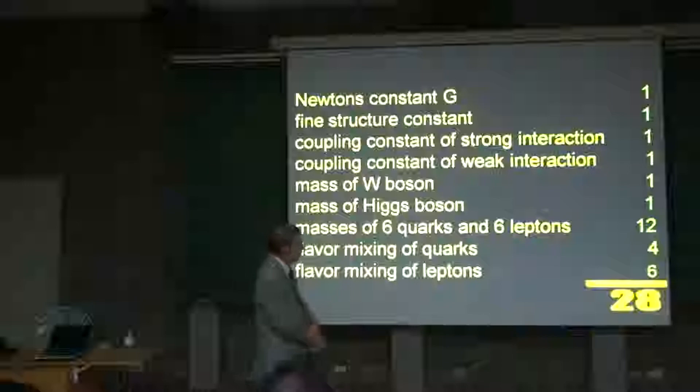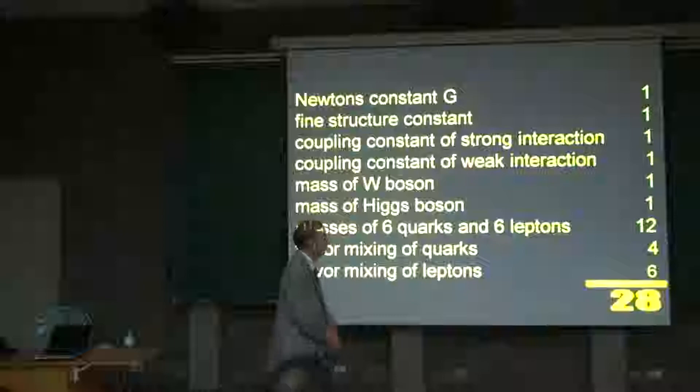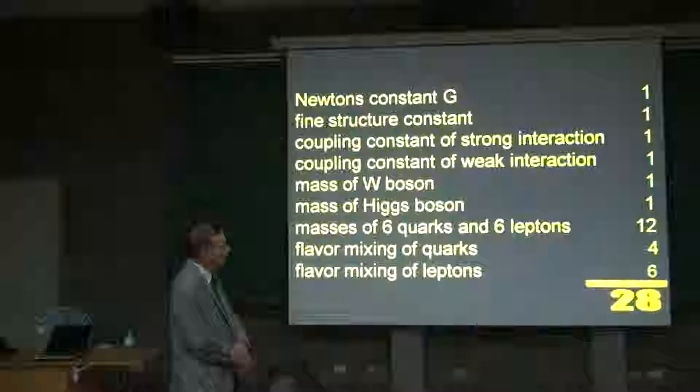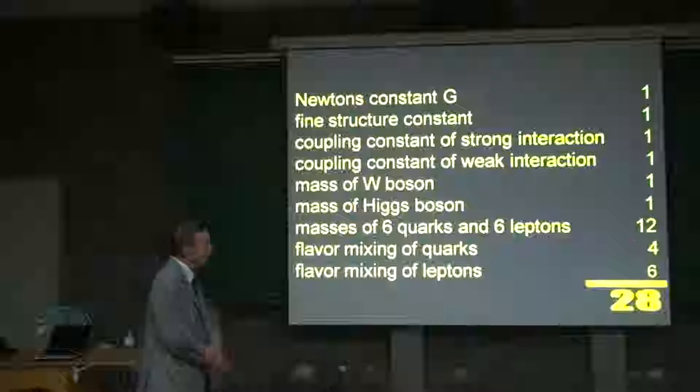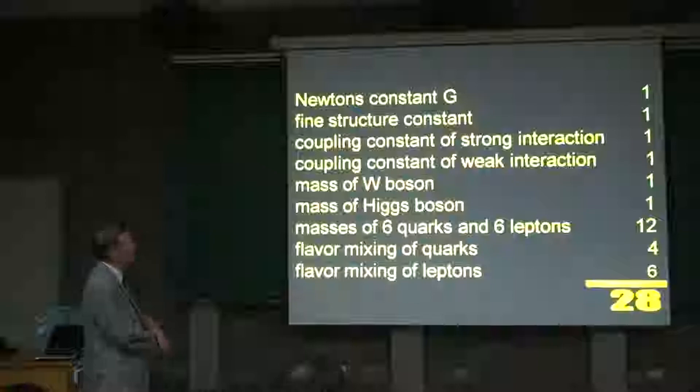There is also flavor mixing of the leptons, observed for example in terms of neutrino oscillations. These are also described by 3 mixing angles and 1 phase parameter, but it could be that for leptons we have 2 more phase parameters, so altogether 6. If you add all this up, you come to 28 — a very large number of free parameters.